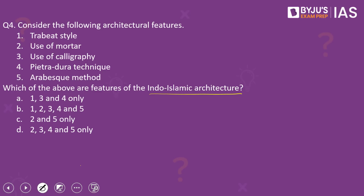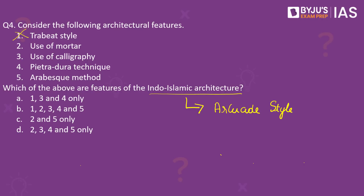Coming back to the question — the first architectural feature, the Trabeate style, is not a feature of the Indo-Islamic architecture. The Trabeate style was characterized by the use of lintels and was observed in the construction of temples. What was observed in Indo-Islamic architecture was the Arcuate style, characterized by the use of arches and domes, and also minars. Given the predominance of arches and domes, mortar was an important construction material. As against stone — the primary component of constructions before the Indo-Islamic style — the Indo-Islamic architecture used bricks, lime plaster, and mortar.